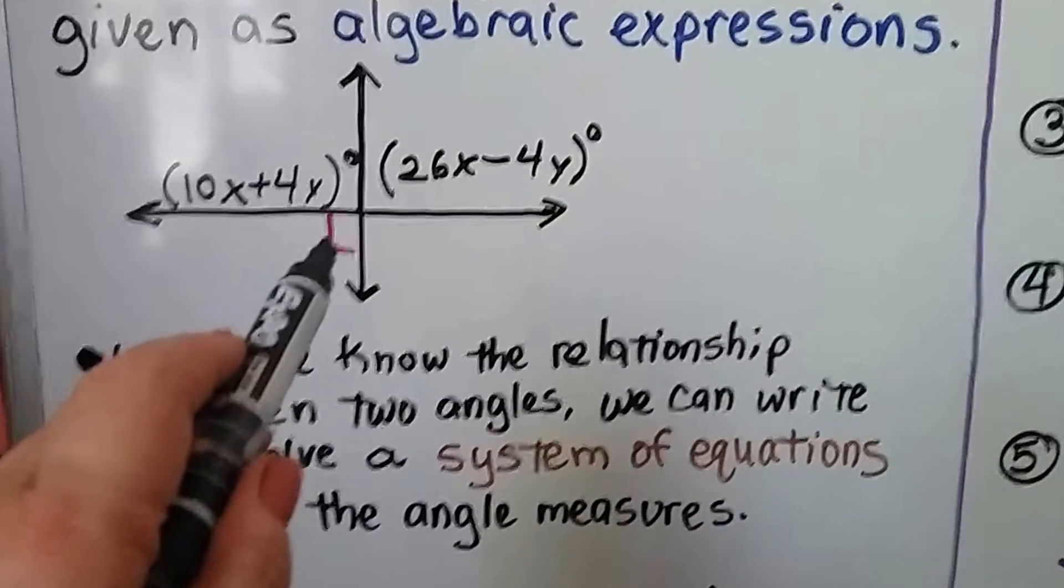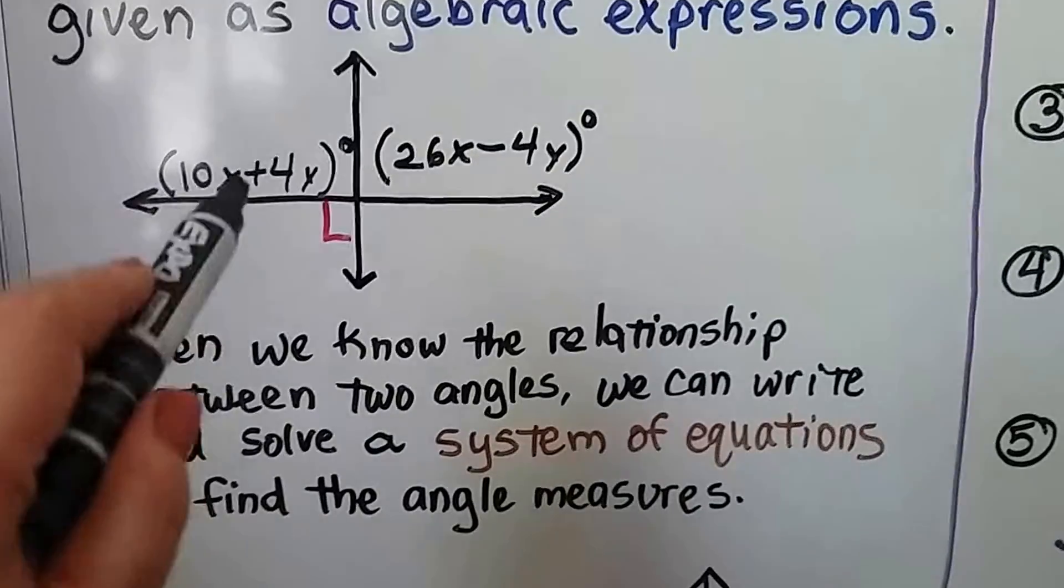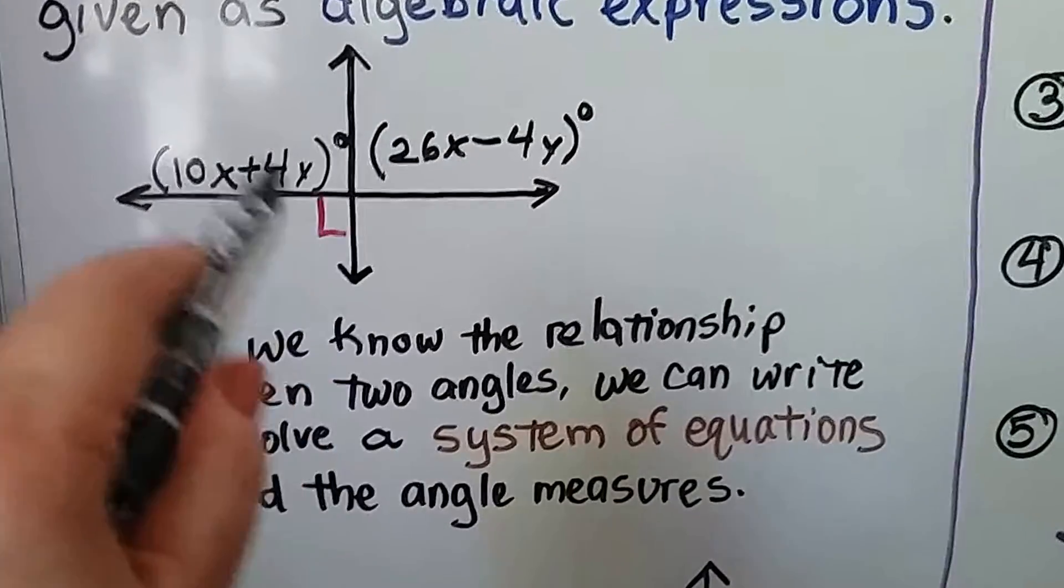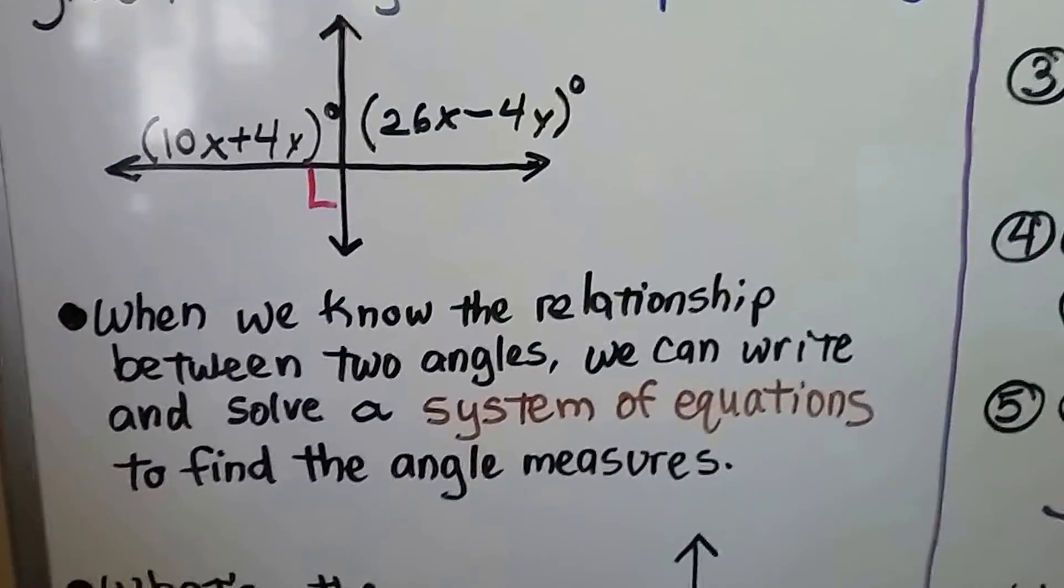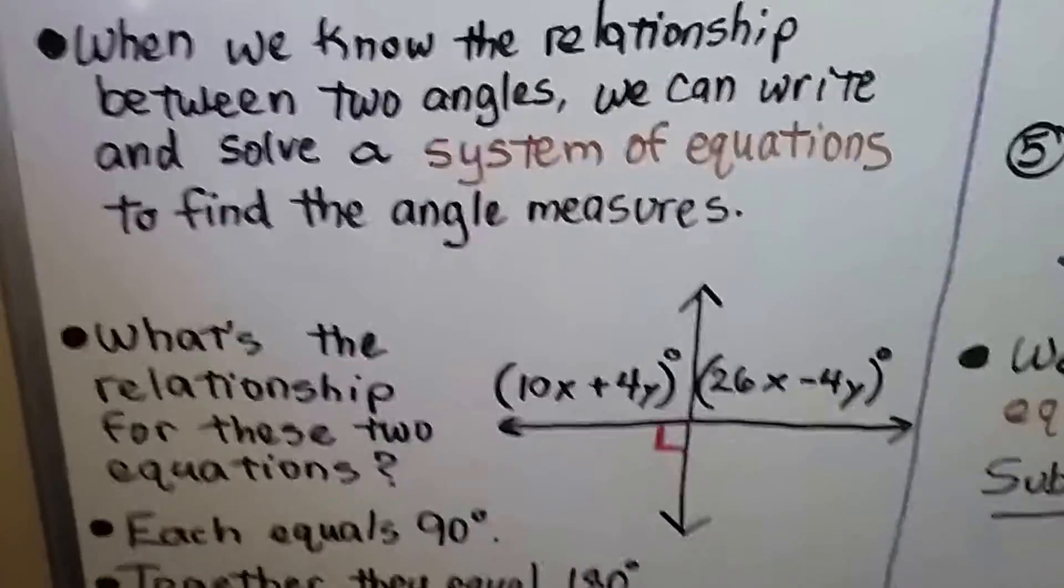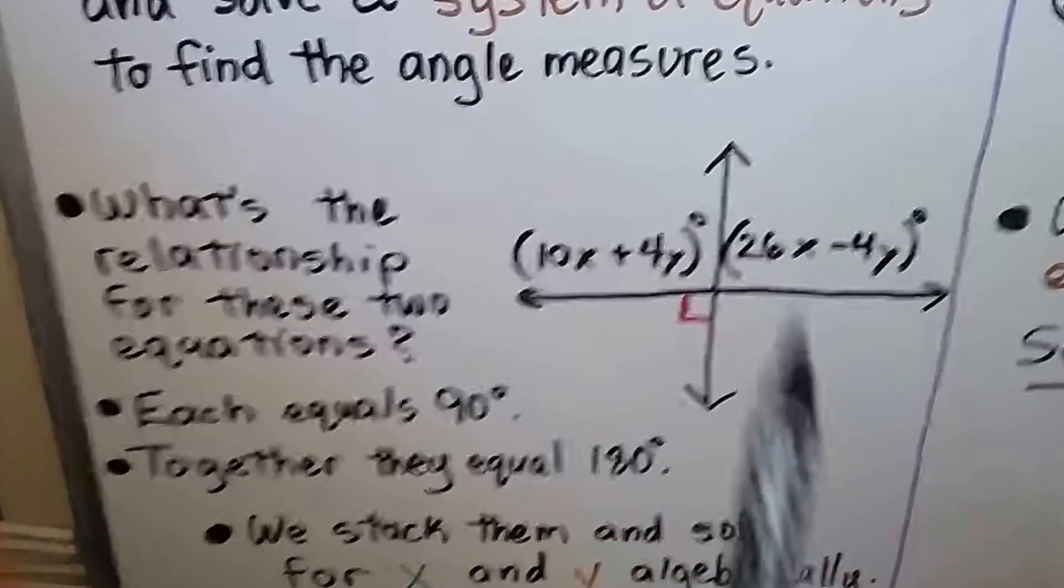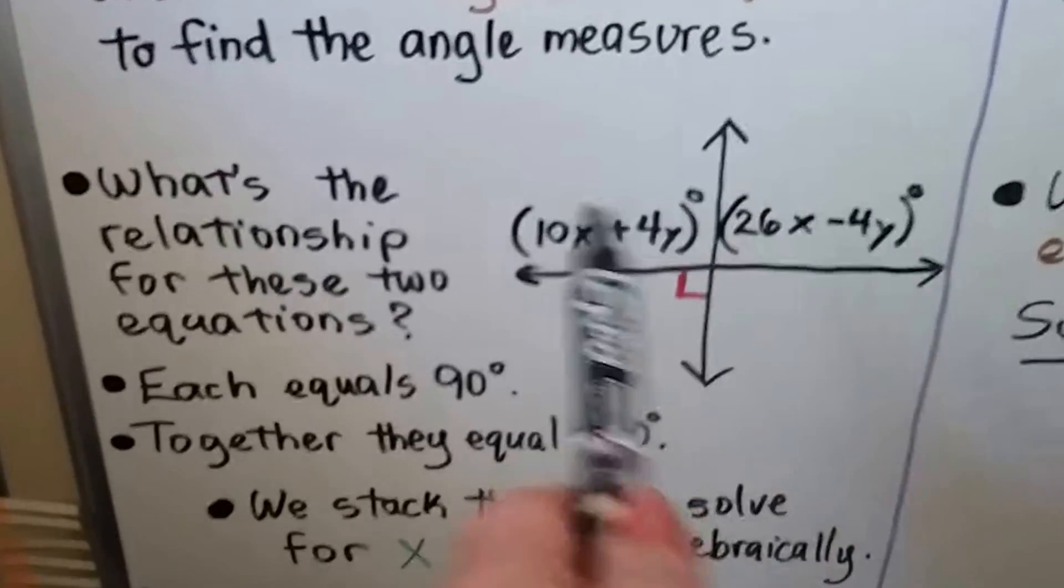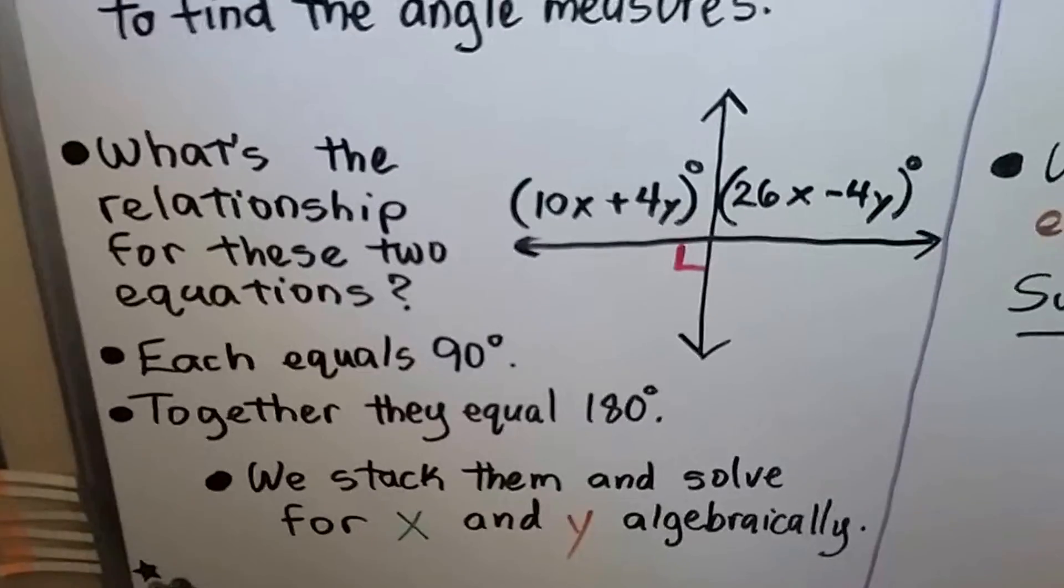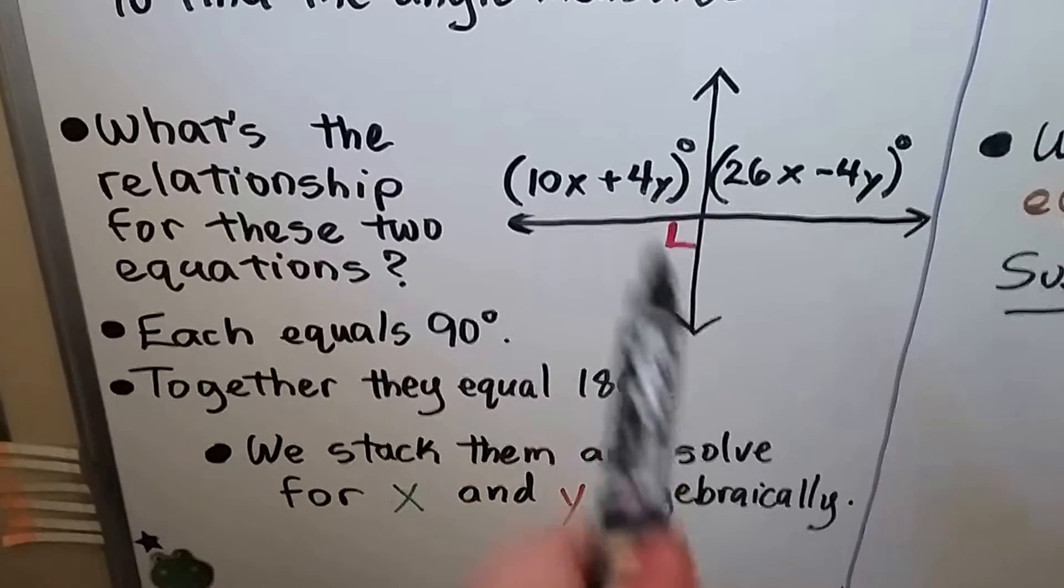We can see this little box here that represents a right angle, a 90 degree angle. So that means if these lines are perpendicular, these both equal 90 degrees each, don't they? So what's the relationship for these two equations? Well, they each equal 90 degrees. Together they would equal 180, wouldn't they? We can just look at this and try to figure out everything we can about these two.